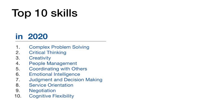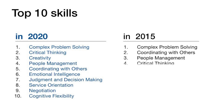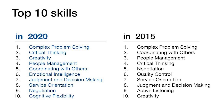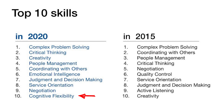Let us look at the top 10 soft skills required in 2020 and compare it with 2015. Significant change, wouldn't you say? Creativity and critical thinking have moved up. Emotional intelligence and cognitive flexibility are new skills that have been added. Cognitive flexibility in many ways is like parallel processing — it is the mental ability to switch between thinking about two different concepts and to think about multiple concepts simultaneously.